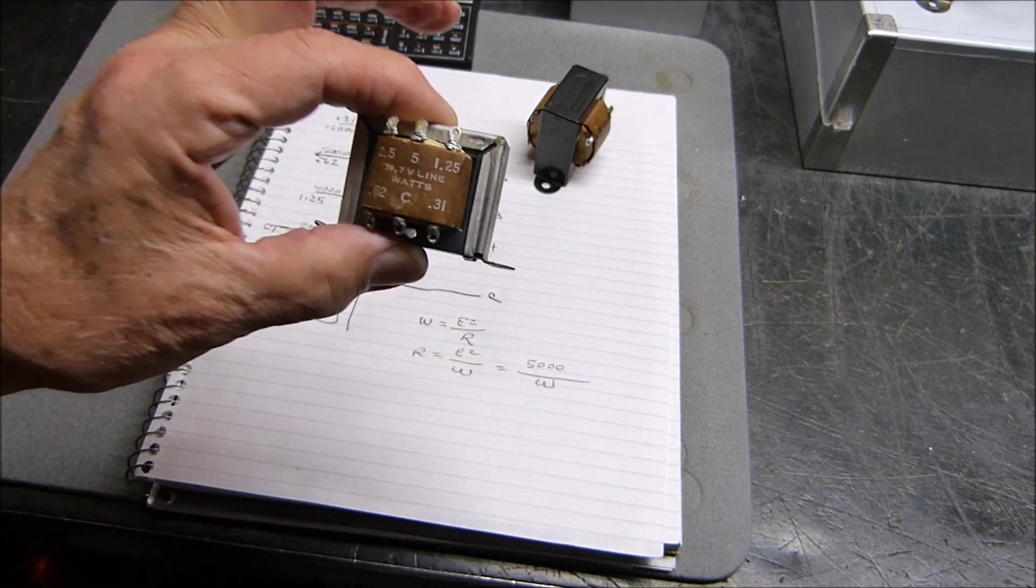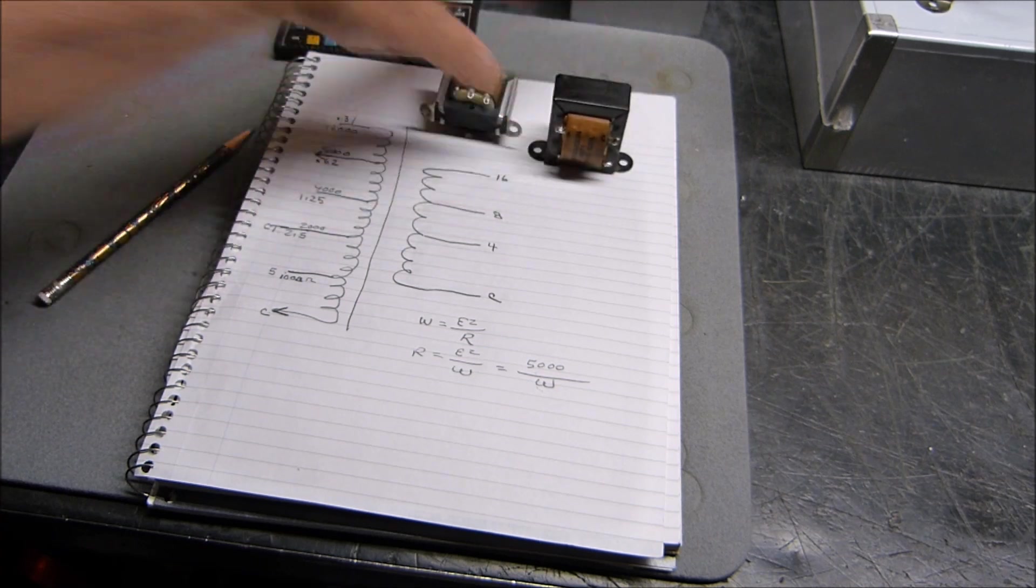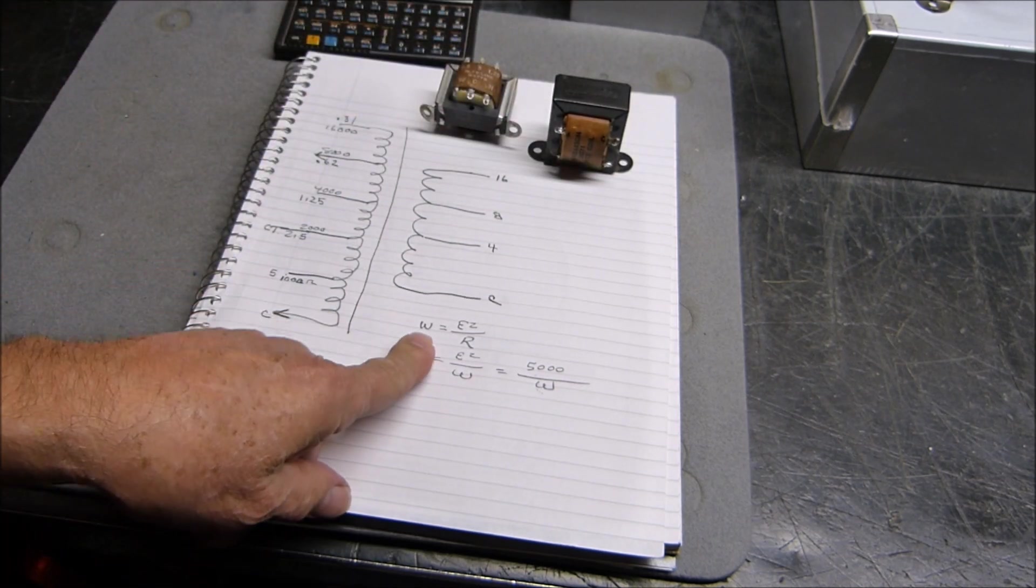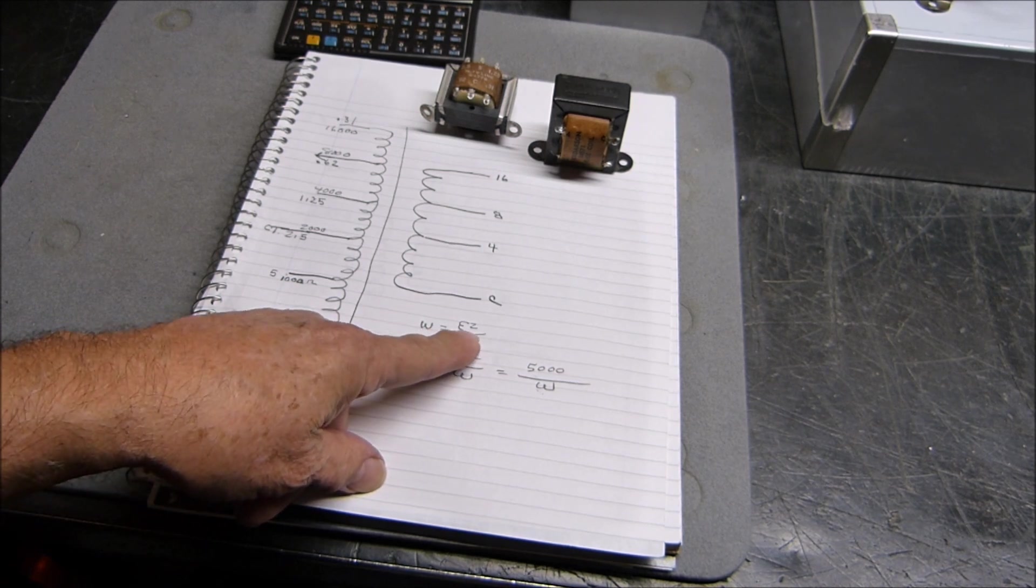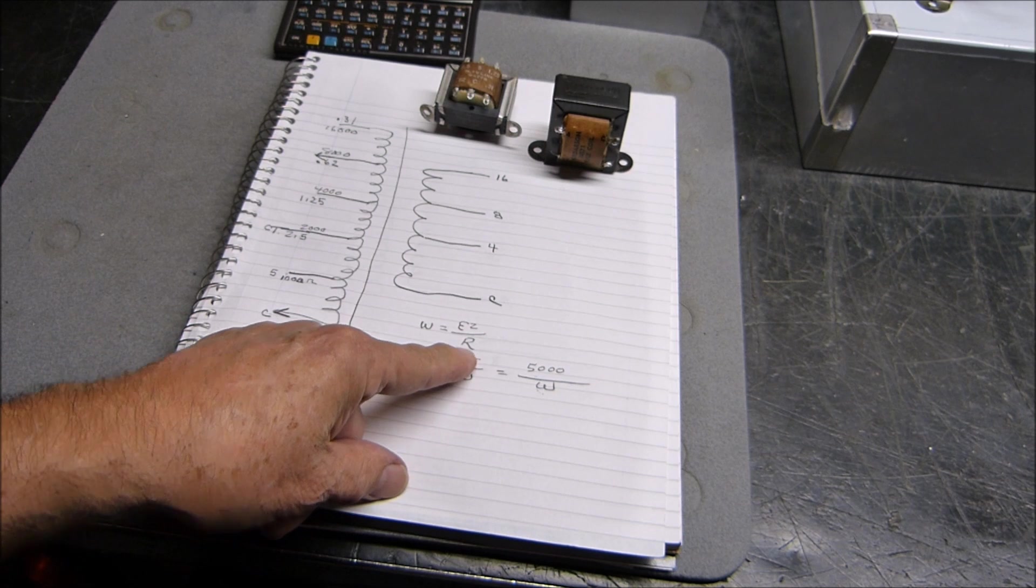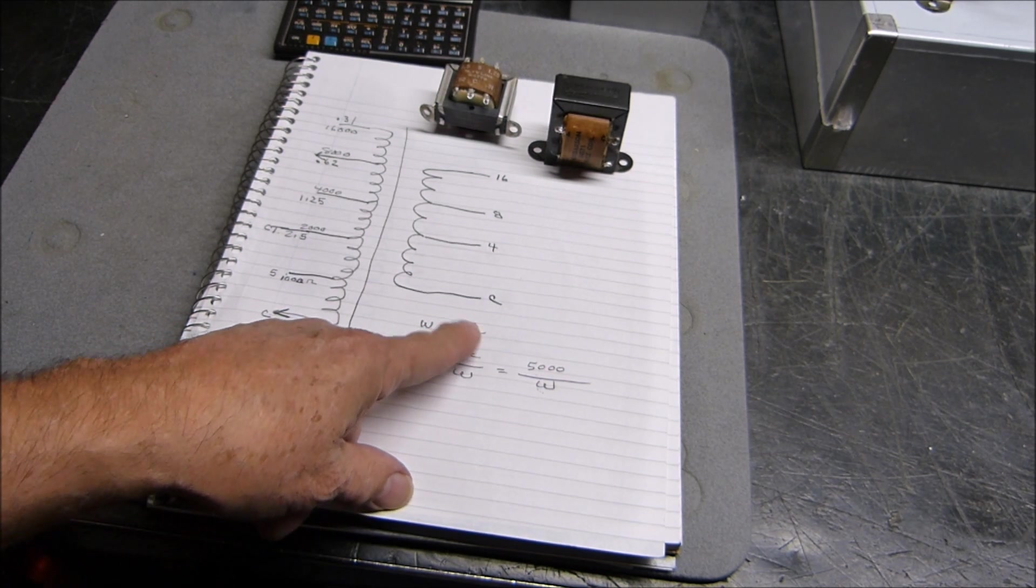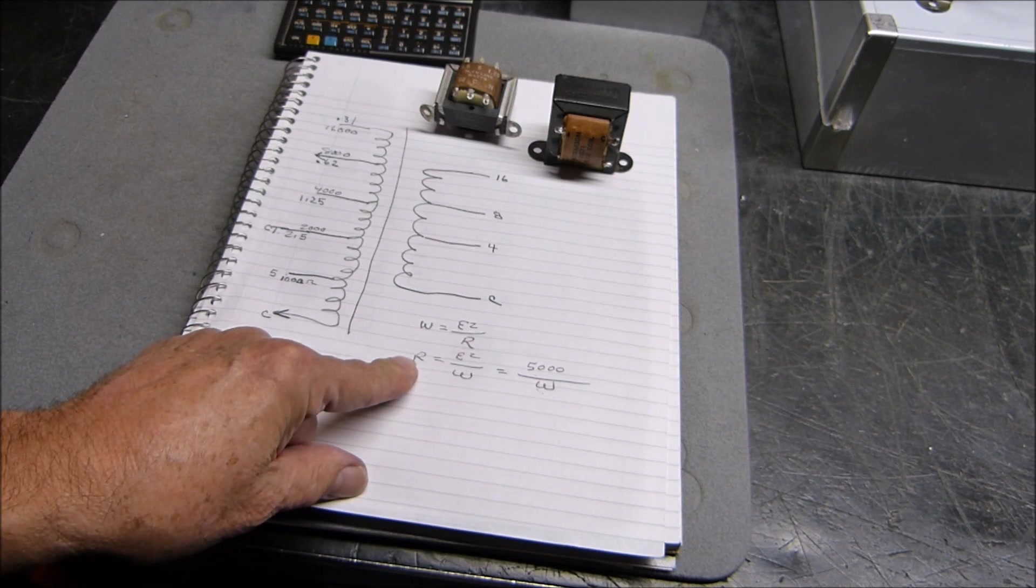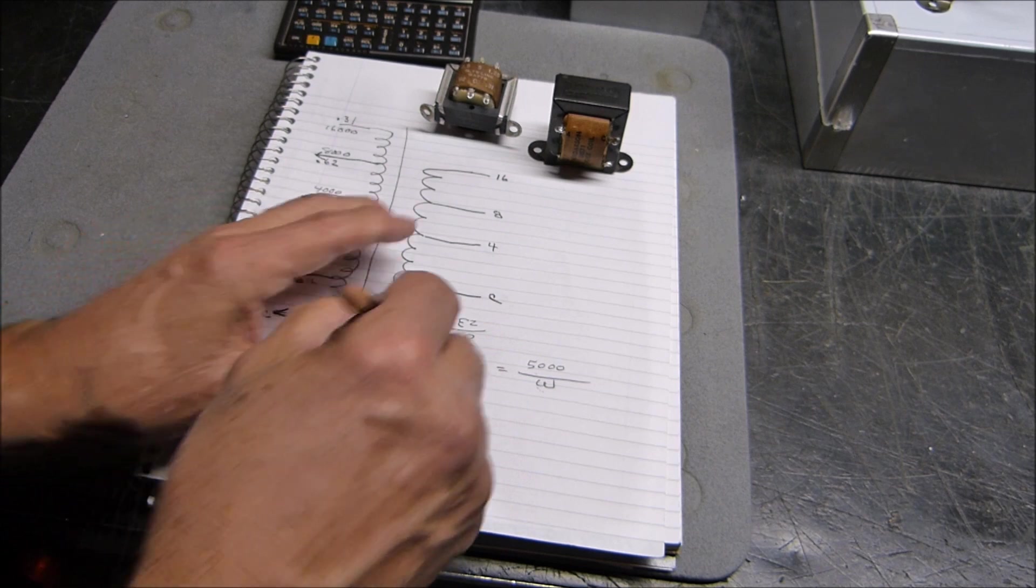Here's what's important. Power equals E squared over R. 70.7 squared over R. We're actually going to replace R with Z. If this is true, then Z equals E squared over W.